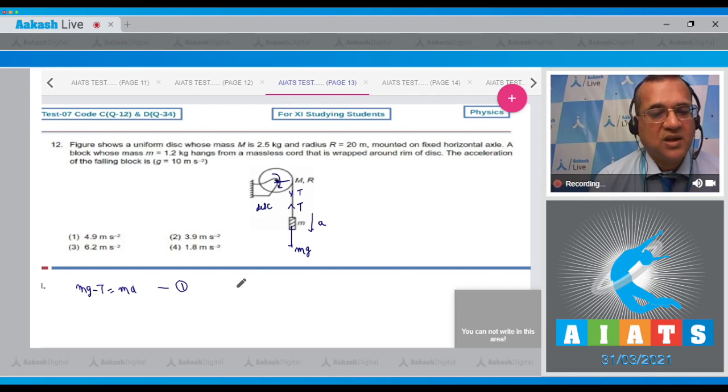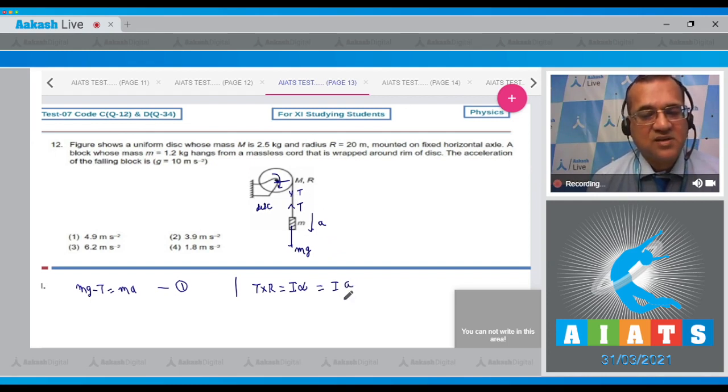Now for the disk, the equation would be that the torque equals t into the radius equals the moment of inertia into angular acceleration. As you know there is no slipping, therefore your alpha will be equal to the tangential acceleration divided by r.